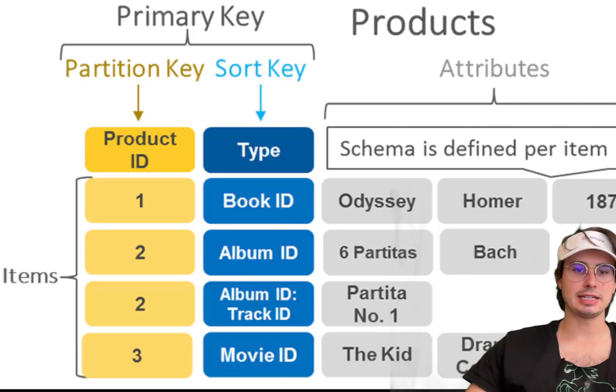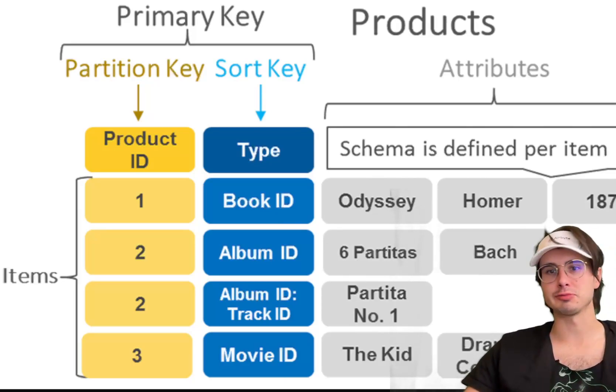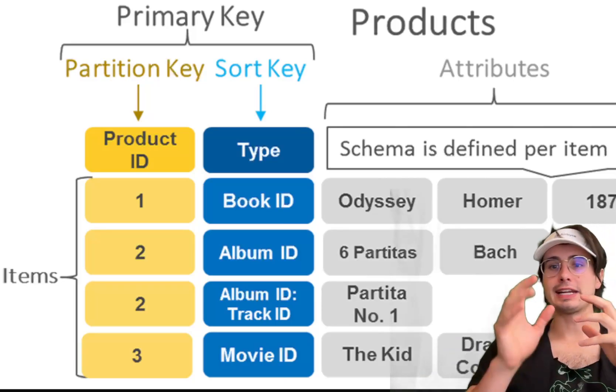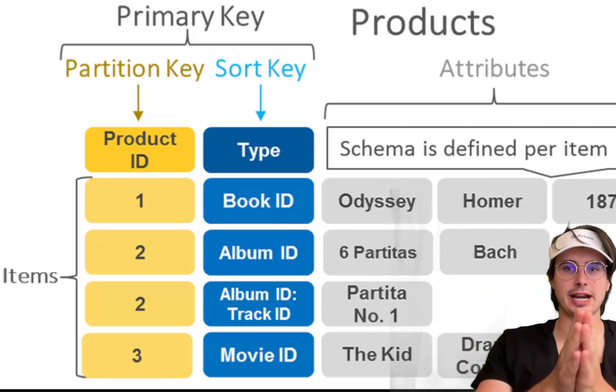But it can lead to uneven data distribution if the data isn't evenly distributed between those two halves. Maybe everyone in your database has a last name before M and so that second partition is way less than the first one. Make sure when you're considering that, is there an even point of distribution that I can segment this data from.